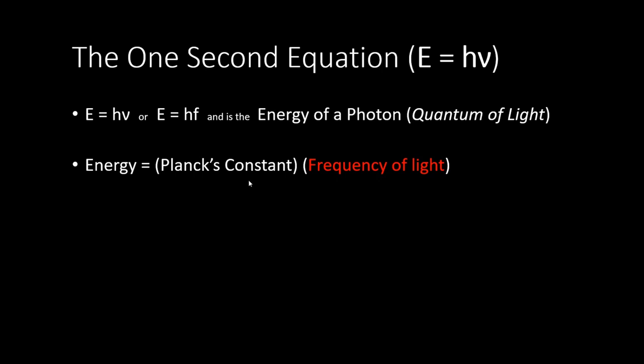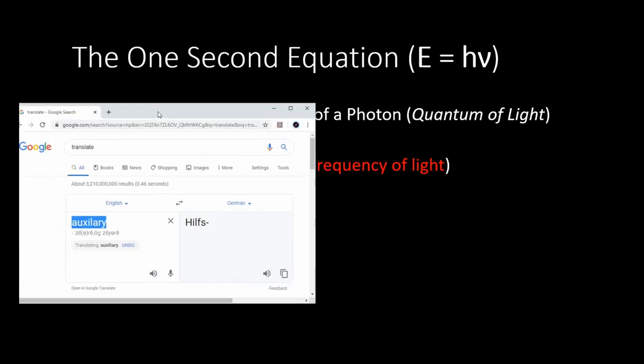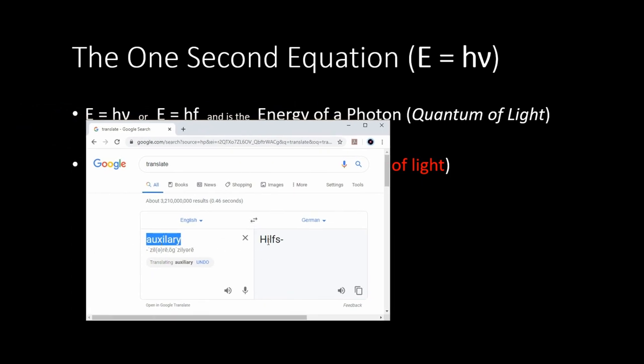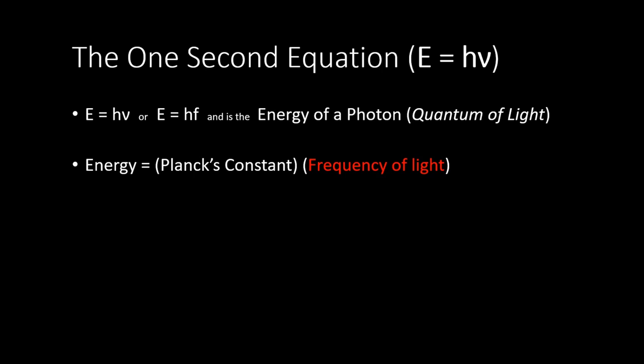Planck's constant really becomes the star of the show once you get done analyzing this equation and figuring out its flaws — this is really what 'quantum' means. The H stands for 'auxiliary' or 'helper' in German. When Planck created this constant, he had no idea what it really meant. It's interesting because it ends up being the star of the show, and we'll be going further into how H came about.